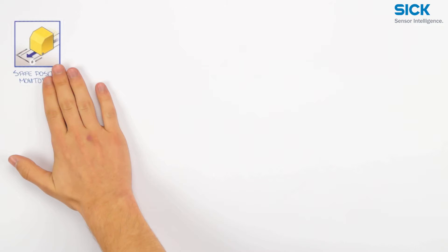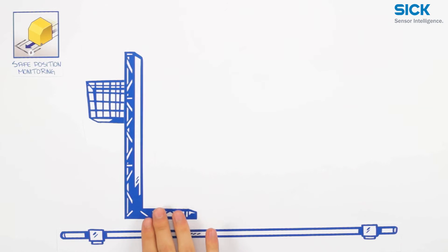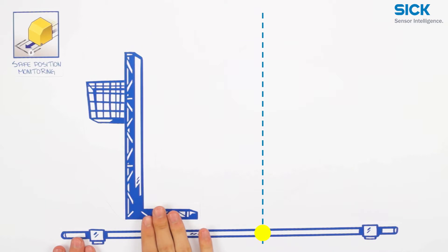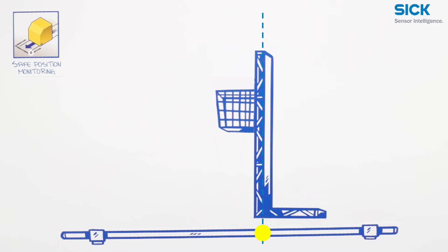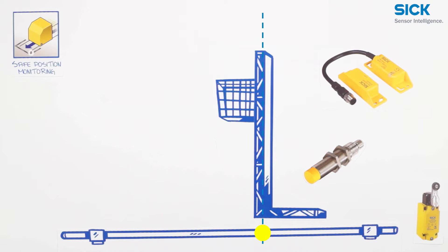Now let's cover safe position monitoring. Some production processes only allow actions to be performed when the machine part is in a certain position. For these applications, you can use non-contact inductive safety switches that are activated by metal, or transponder safety switches which are activated with a coded actuator. To stop the machine safely in the end positions, electromechanical safety position switches can be used.